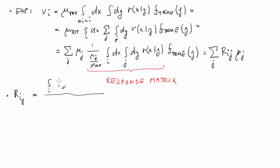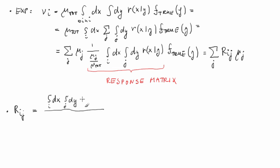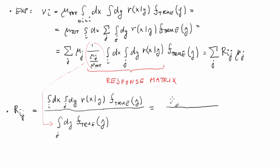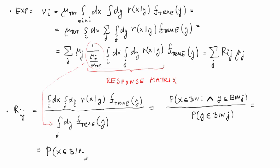Let's show it mathematically. R_{ij} = [∫_{bin i} dx ∫_{bin j} dy R(x|y) f_true(y)] / [∫_{bin j} dy f_true(y)]. This is equal to the probability for x to fall into bin i and y to fall into bin j at the same time, over the probability that y falls into bin j. And this equals the probability that x falls into bin i given that y fell into bin j — which is clearly the conditional probability.